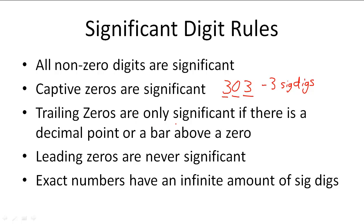Trailing zeros are only significant if there's a decimal point or a bar above a zero. So if we have a number like 12,000 or 1,200, there are only two significant digits — 1 and 2 — because those trailing zeros are not significant. But if I write 1,200 with a decimal point, those two zeros become significant, giving four significant digits.